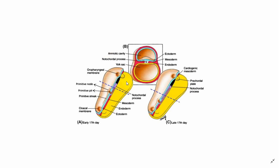There are certain structures we also need to look at — the oropharyngeal membrane and the cloacal membrane. These membranes are actually the points where the ectoderm and the endoderm are attached. The oropharyngeal membrane is towards the cranial side and the cloacal membrane is towards the caudal side. This is the primitive streak and this is the primitive node.